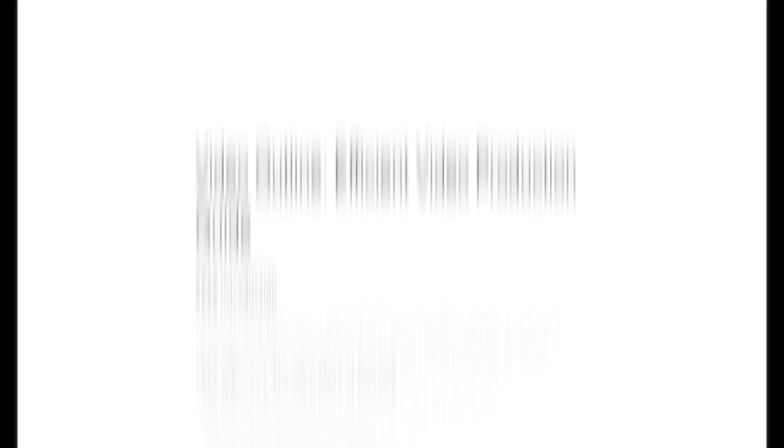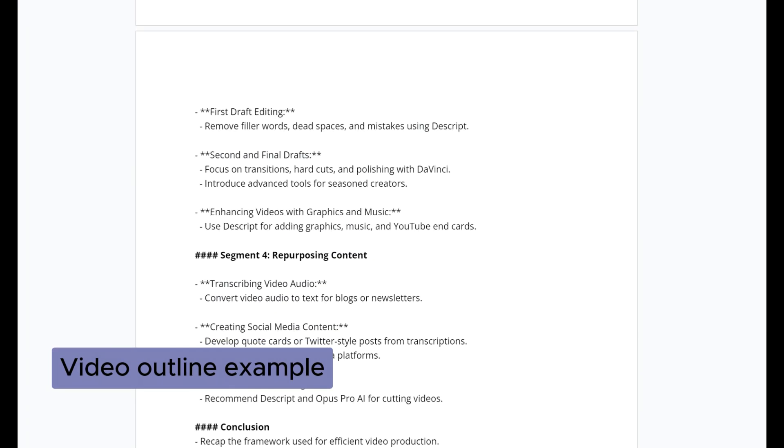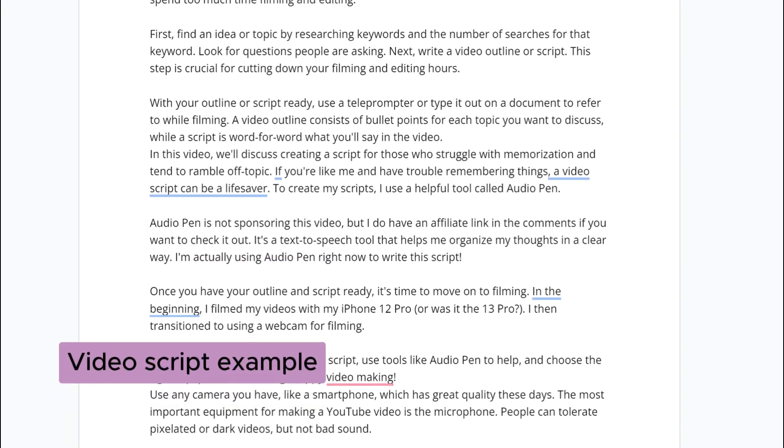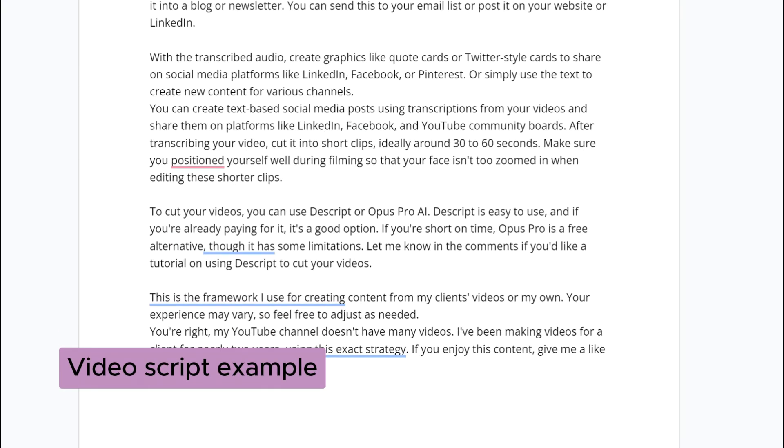With your outline or script ready, use a teleprompter or type it out on a Word doc to refer to while filming. Video outline consists of bullet points for each topic you want to discuss, while a script is word for word what you'll say in the video. If you're like me and have trouble remembering things, a video script can be a lifesaver.